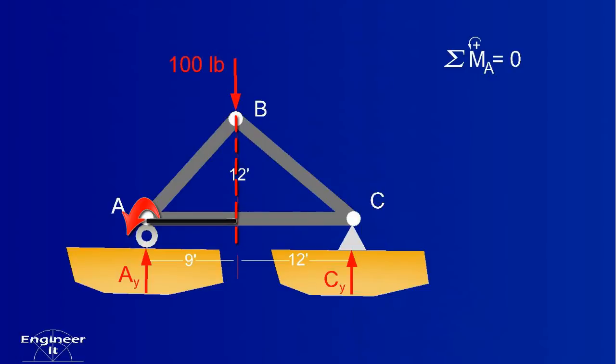The 100lb force has a lever arm of 9 feet in the negative moment direction. And CY has a lever arm of 21 feet in the positive moment direction. The reaction at C will equal 42.85 pounds.